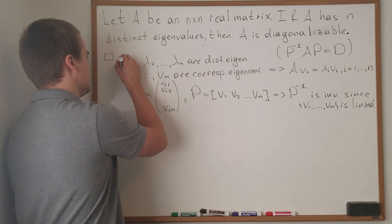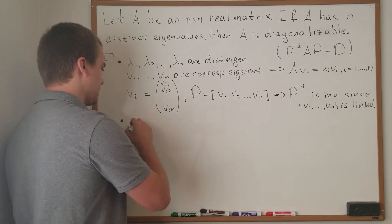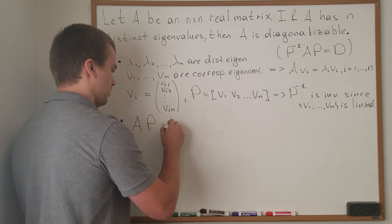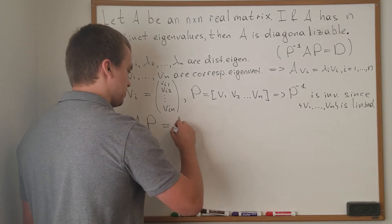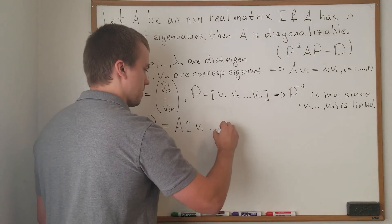This was our first step. So let's discuss our second step. Let's take our matrix A and multiply by our matrix P. In this case, I will have A multiplied by V1 and Vn.